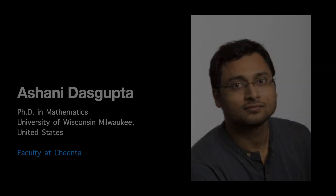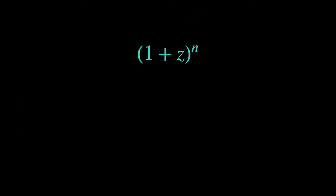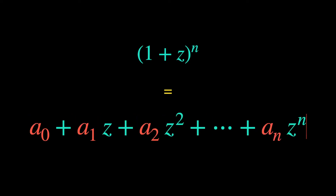Let's look into this problem. We have the expression (1 + z) raised to the power n, and the problem says that it equals a₀ + a₁z + a₂z² up to aₙzⁿ. The numbers a₀, a₁, a₂, … aₙ shown in red are all real numbers — this is given data.